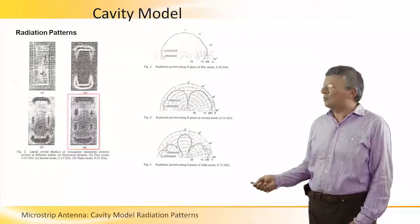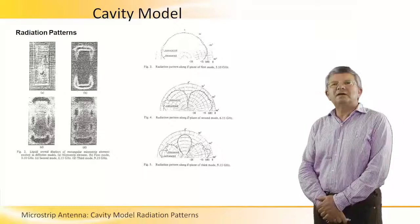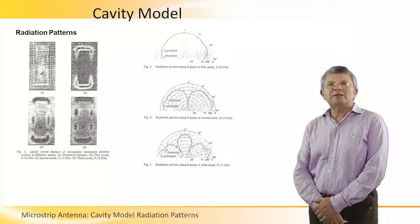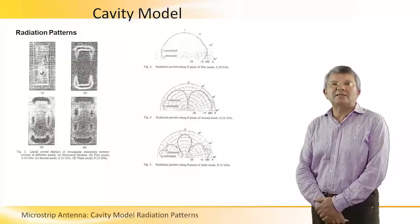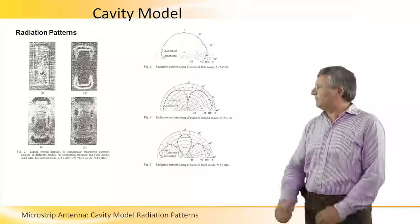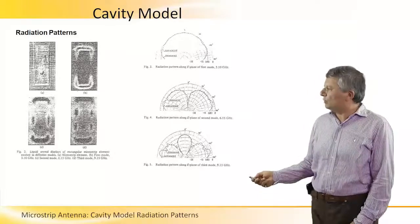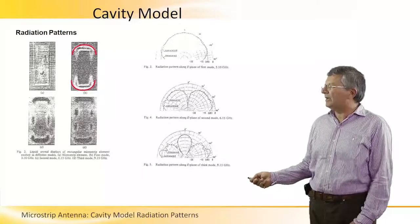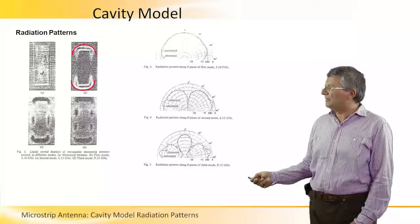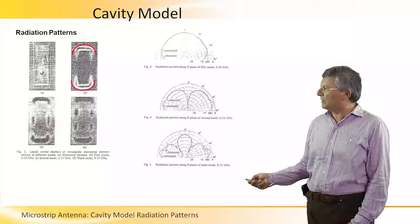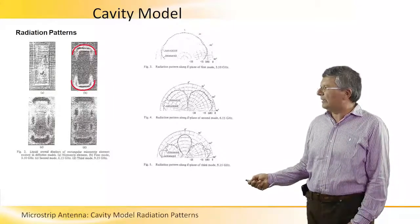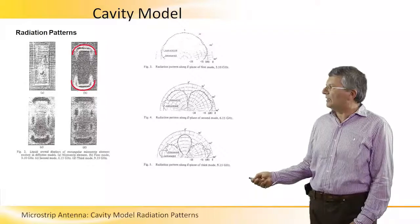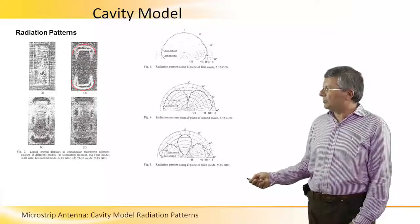At those three frequencies you obtain different types of modes that propagate in the resonant cavity of the patch, such that for the lowest frequency, 3 GHz, you obtain those two radiating slots on the edges of the patch.